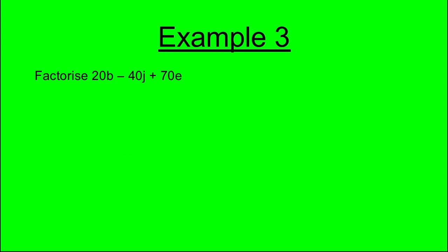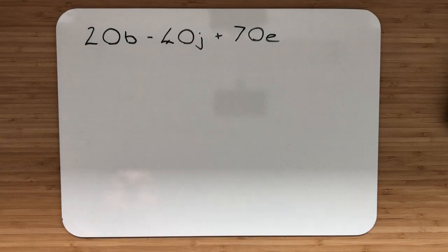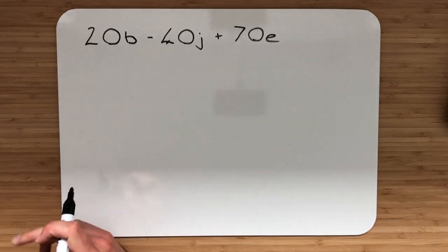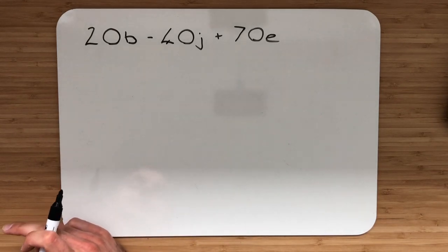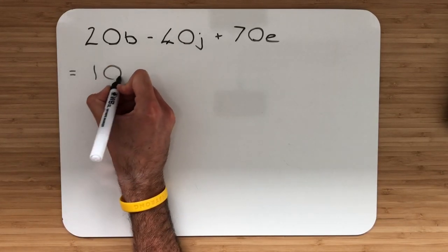Example 3. Factorise 20b subtract 40g add 70e. In example 3, we have 3 terms. Nothing changes at all. Let's check for our highest common factor. Because these are all different letters, we're only going to focus on the numbers. What number goes into 20, 40 and 70? The highest common factor has to be 10.